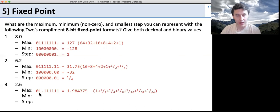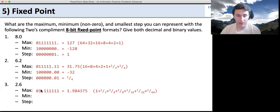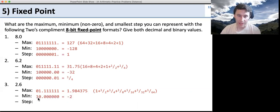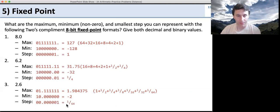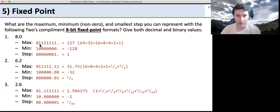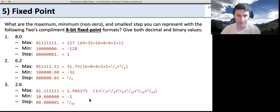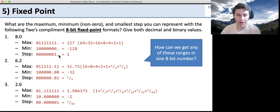For the 2.6 format, the maximum value is 1 plus a half plus a quarter plus an eighth, sixteenth, thirty-second, sixty-fourth, or 1.984375. The minimum is negative 2, and the step size is 1/64. If you ignore where the binary point is, these numbers are all the same bit patterns — the maximum is all 1's except the first bit, the minimum is 1 followed by zeros, and the step size corresponds to the last bit. By placing the binary point at different positions, we get different ranges and minimum step sizes from the same 8-bit number.